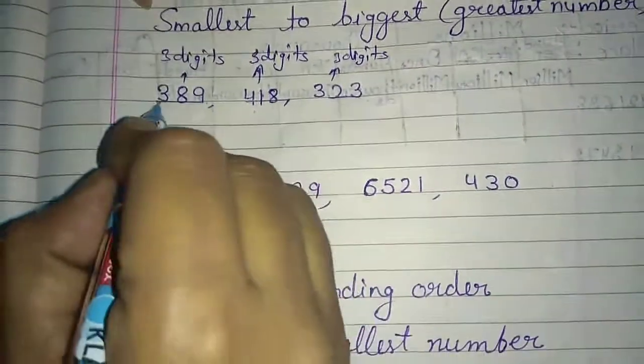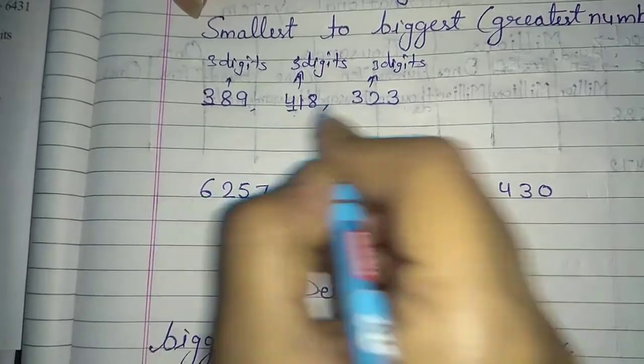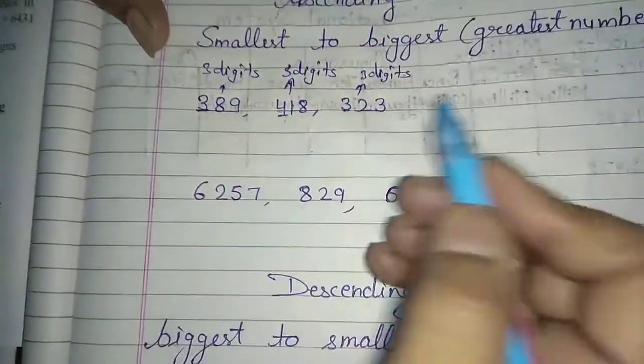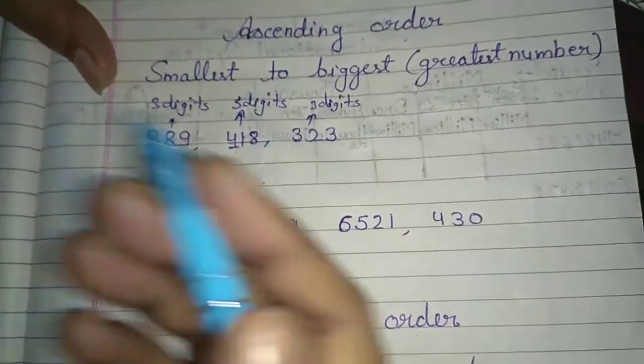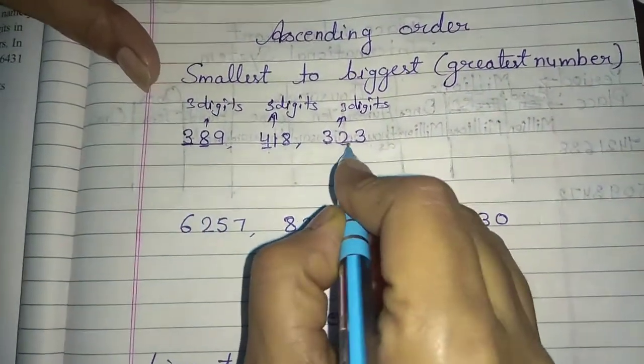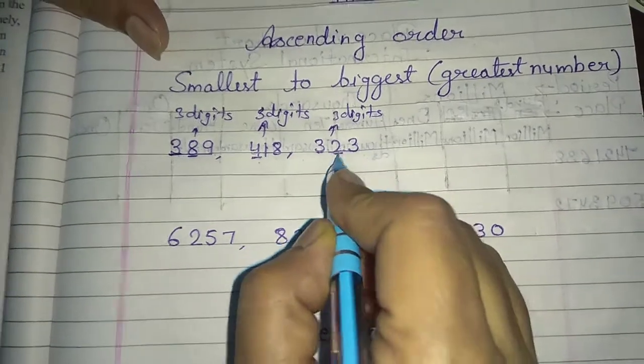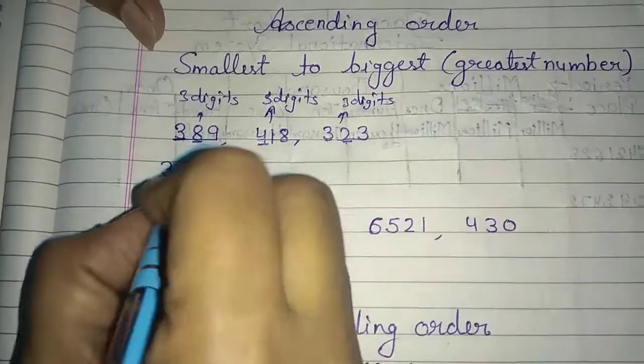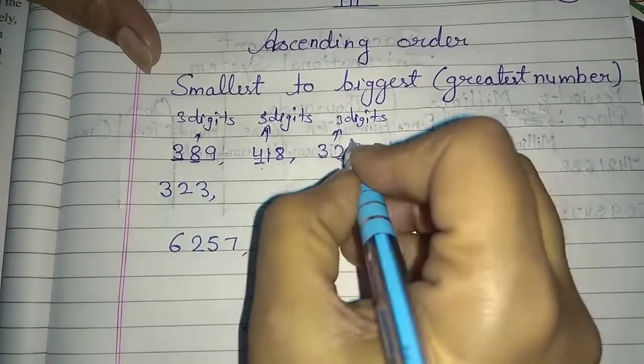Now, in this hundred place, it's 3, 4 and 3. Obviously, 3 is small and 4 is big. So now we need to see which number next number? 8 and 2. So which number is smallest? 2 number. So which number is smallest? 323.